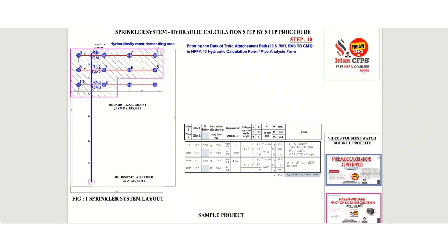Going forward with step 10. Here in step 10, we are going to enter the data of the third attachment path. We are going to put the data of 10 and RN3 and RN3 to CM3 in the hydraulic calculation form.